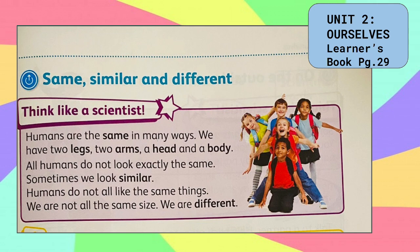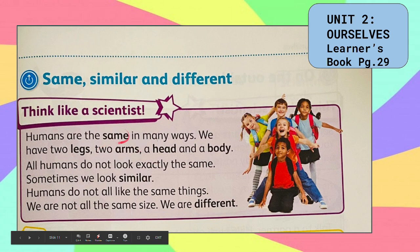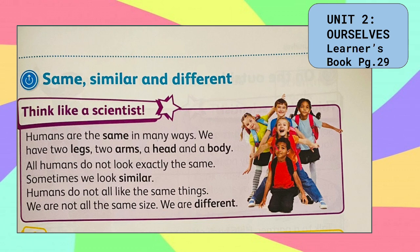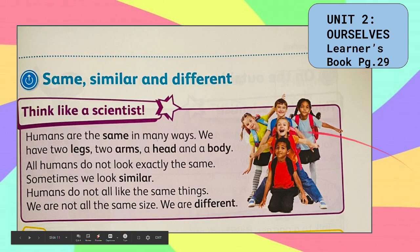Same, similar, and different. Humans are the same in many ways — we have two legs, two arms, a head, and a body. All humans do not look exactly the same. Sometimes we look similar. Humans do not all like the same things. We are not all the same size. We are different. Just look at these pictures.